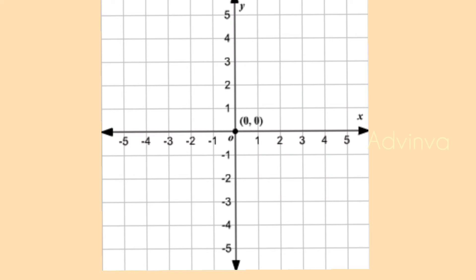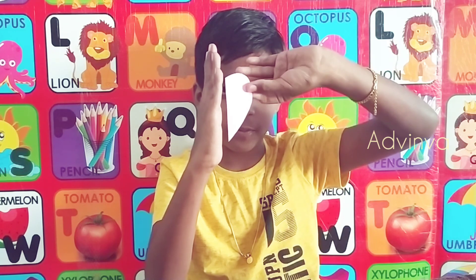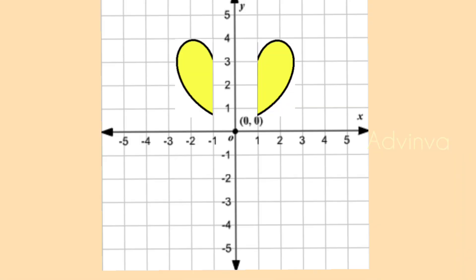Now let's talk about the mirror line. A mirror line is a line that shows a reflection — both sides have to look the same, like a reflection. If you put a shape near a mirror, you see the other half. It will be one centimeter away from the mirror line on one side, and the same one centimeter away on the other side — exactly the same, but mirrored.